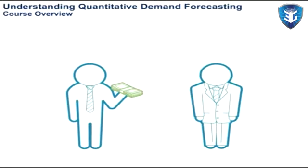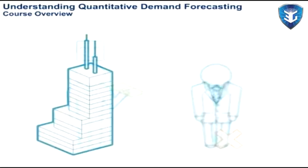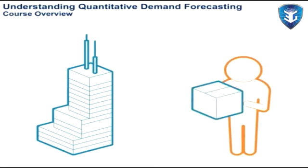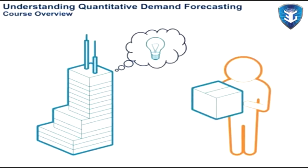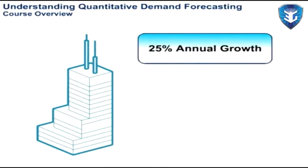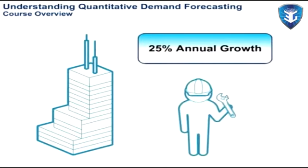Demand forecasting is an occupation that rewards an employee for being wrong — surprisingly, you can be wrong and still remain in the company's good graces. Errors in this occupation are tolerated because all organizations have a need to understand and quantify future customer demands for their products and services. This knowledge will facilitate decisions that can significantly increase the competitiveness and profitability of the organization.